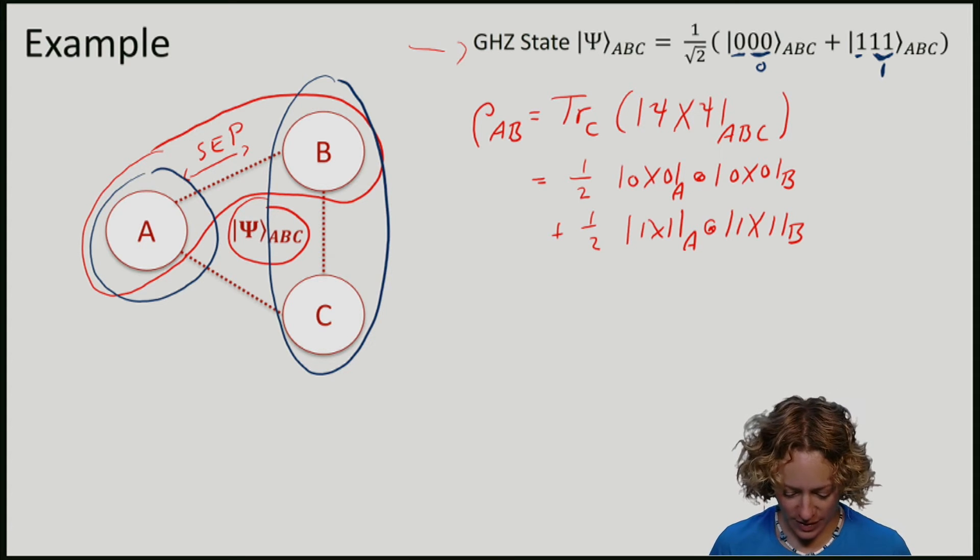So across A together with B and C, we are entangled.